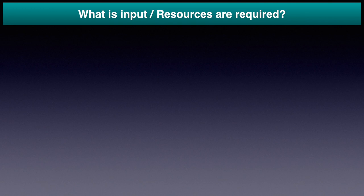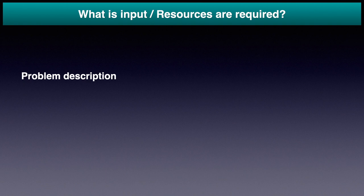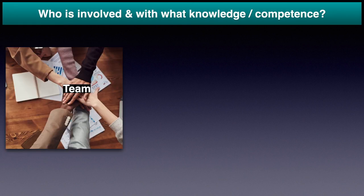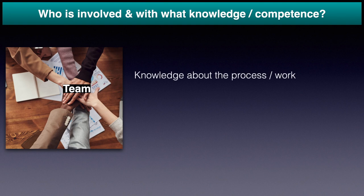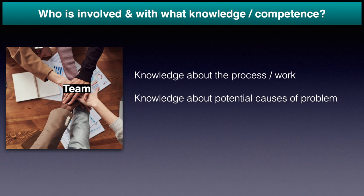Input and Resources Required. The input required for the Ishikawa Diagram is a Problem Description, which has to be clear and concise. Please refer to my video on problem description for more details; the link is in the description box. Other inputs or resources required are the same as for brainstorming: who is involved, and the knowledge and competence required. People involved in Ishikawa Diagram preparation should possess knowledge about the process or work and knowledge about potential causes of the problem.